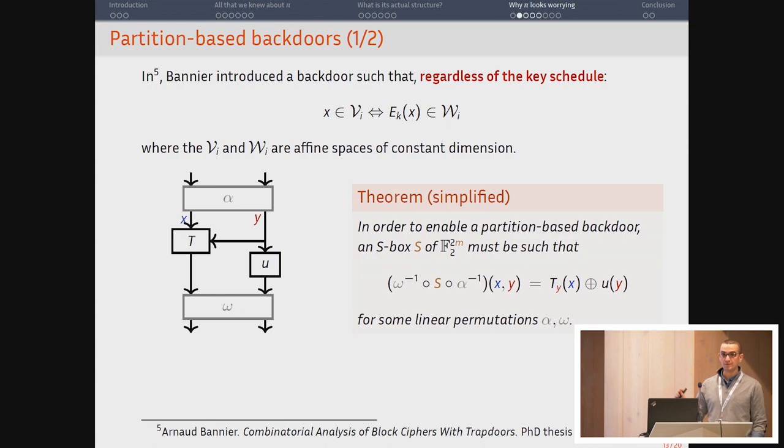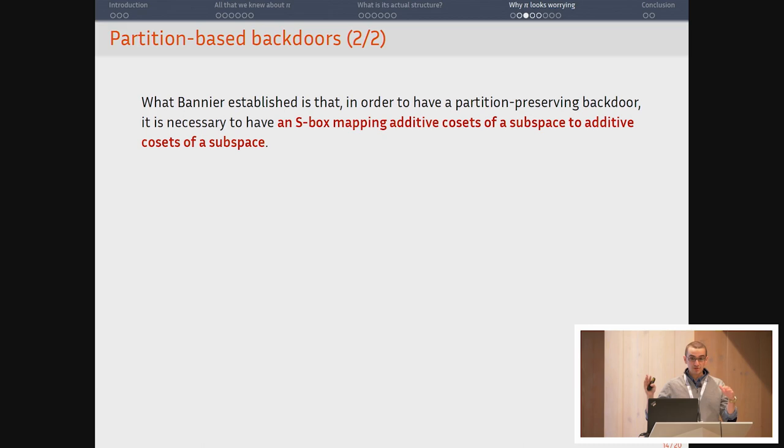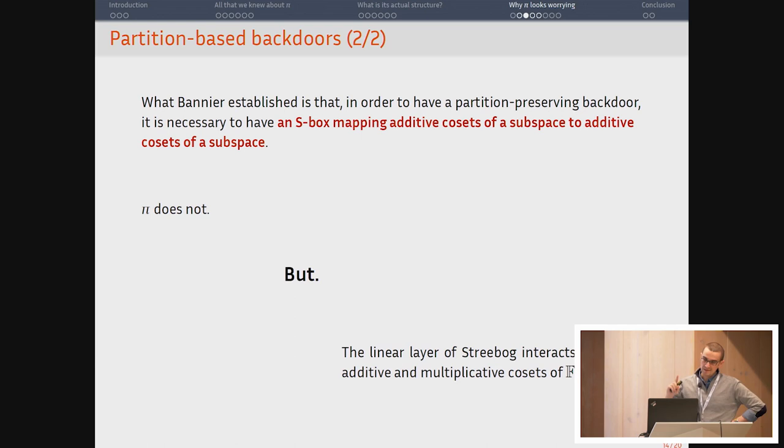So the S-box has to map a partition of the space into affine subspaces to a partition of the space into affine subspaces. And if you write it with boxes, like I always do, this is what you need. So if you want to build a backdoor of this specific type, then you need an S-box which looks like this. And in particular, if you write it formally, what it means is that you need to have an S-box which maps additive cosets of a subspace to additive cosets of a subspace. So that's what he established. Yeah, what he established is that the S-box has to map additive cosets to additive cosets. That's not what we have here. Pi maps multiplicative cosets to additive cosets.